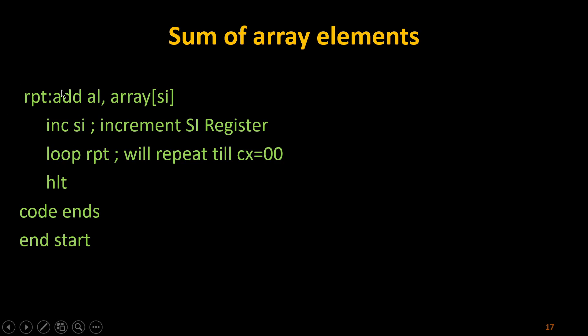CX is automatically decremented from 05 down to 00, and after that it exits the loop. Until that point, SI keeps incrementing itself. After the loop I end the code segment and end the start, completing the addition of array elements with MASM 8086.